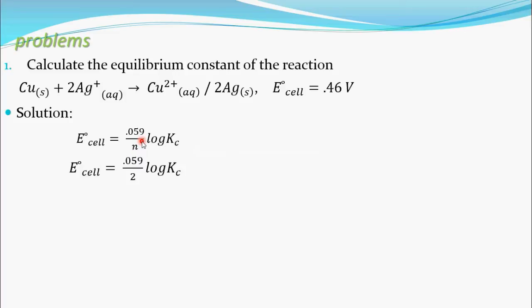So, E_cell equals 0.059 by 2 into log of Kc. Now, you know E_cell, that is 0.46, we can easily find out this Kc value, that is equilibrium constant.